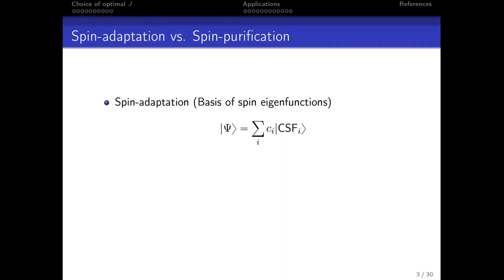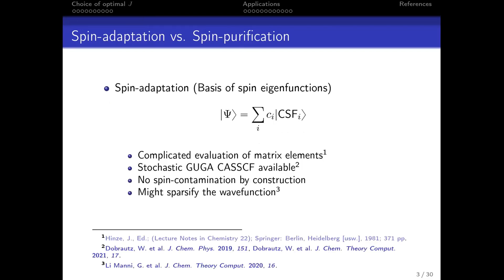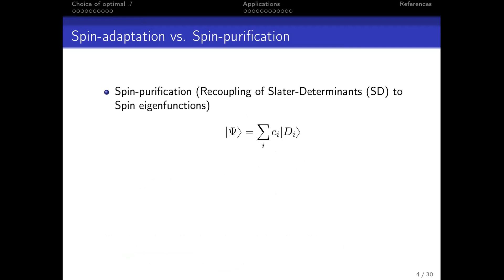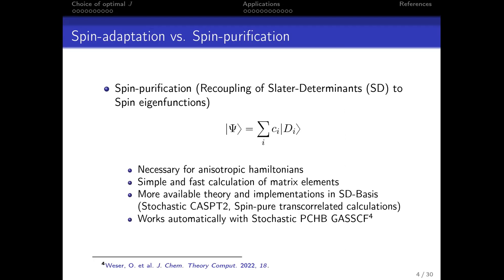If you want to do spin purification, you can either do spin adaptation or spin purification. Spin adaptation would be a basis of spin eigenfunctions, for example by Guga, and then we have no spin contamination by construction. But you have disadvantages like complicated evaluation of matrix elements.